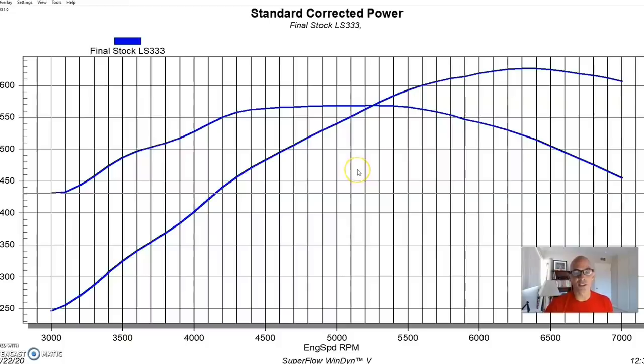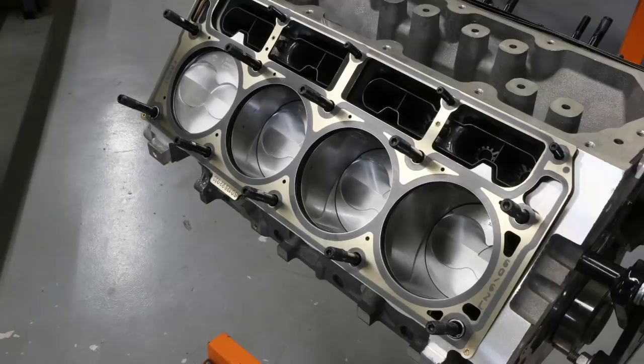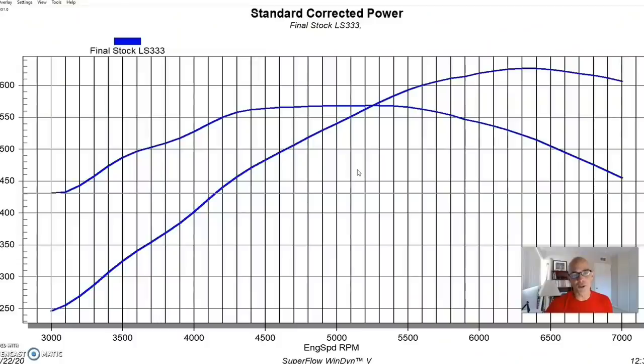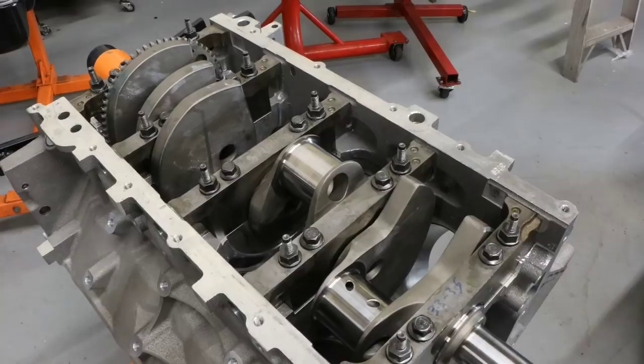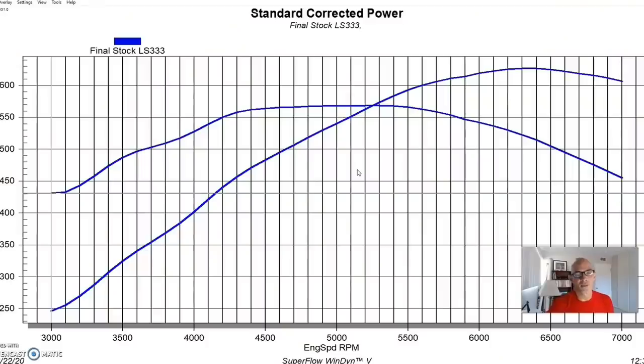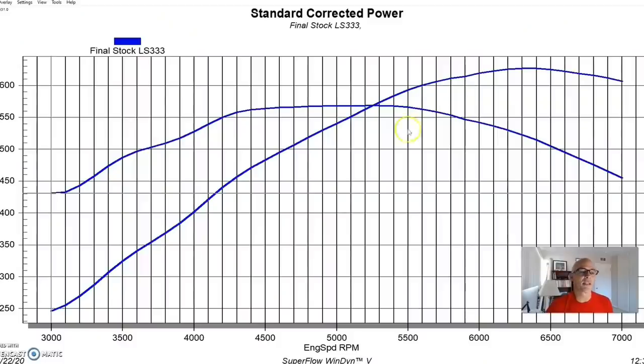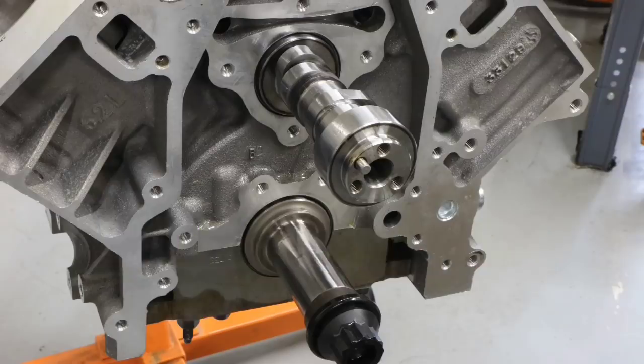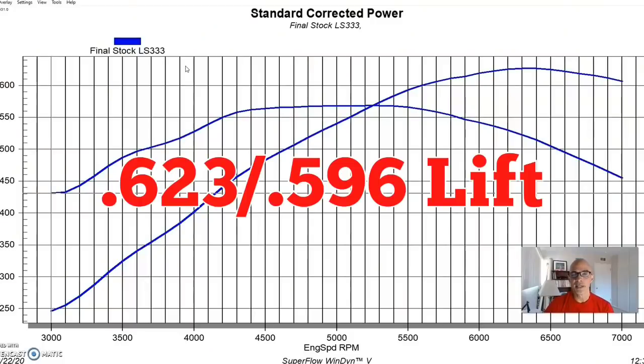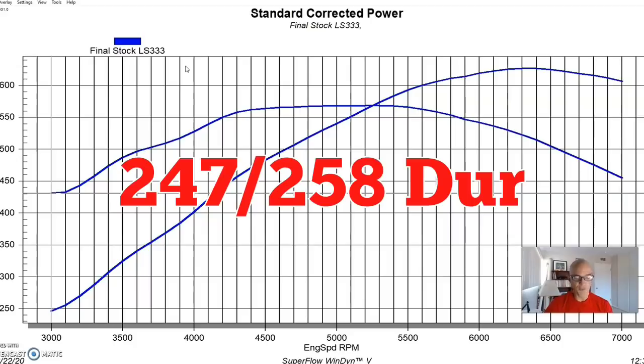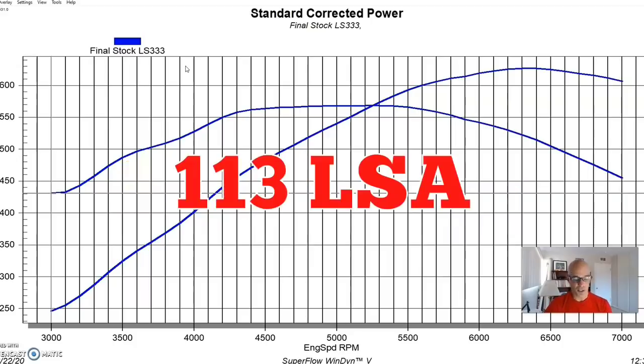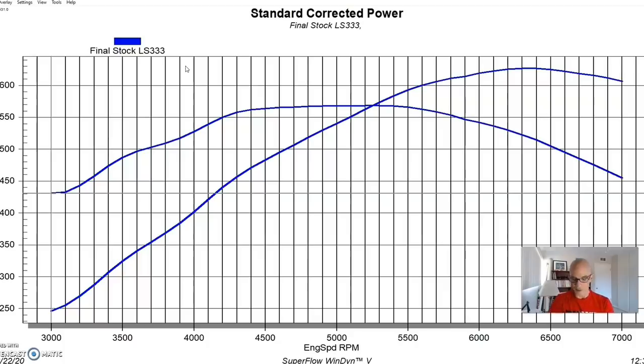To be able to test this, I built a 416 stroker, which is basically an LS3 block that we bored and stroked. We went out to 4.070 bore and then installed a 4-inch stroker crank. The crank and rods came from K1, and we installed forged Wiseco flat top pistons with valve relief. Our cam was a Stage 4 cam from Brian Tooley Racing: 623/596 lift split, 247/258 degree duration split, and 113 degree lobe separation angle.